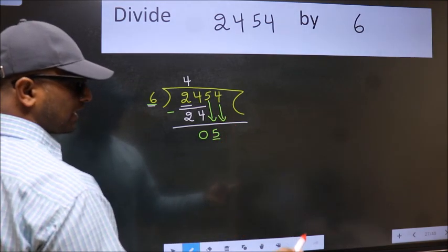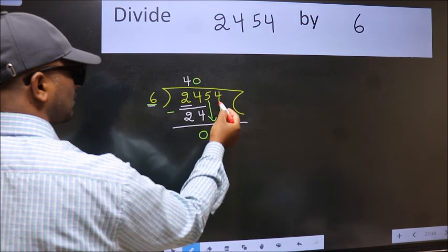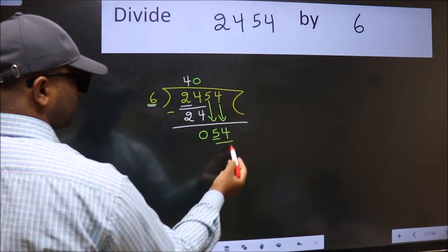The rule to bring down the second number is to put 0 here. Then only we can bring this number down. So, 54.